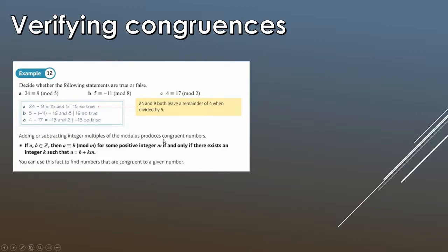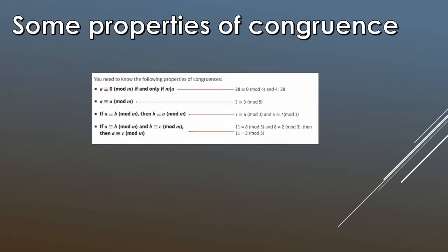That illustrates the ideas behind verifying congruence. Now here are some properties of congruence — you don't need to memorize these, but knowing them makes life easier. For instance, a is congruent to 0 mod m if and only if m divides a. Also, a is always congruent to a mod m — for example, 3 is congruent to 3 mod 5. And if a is congruent to b mod m, then b is congruent to a mod m.